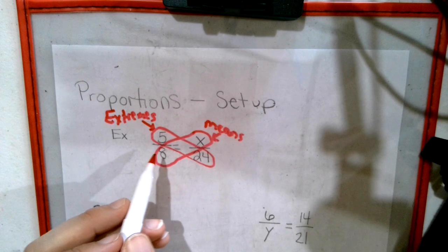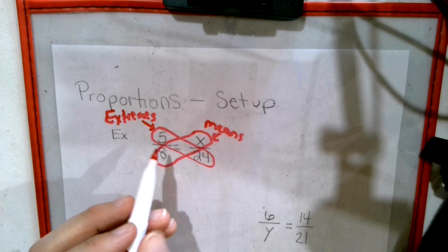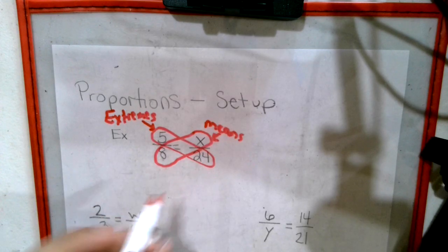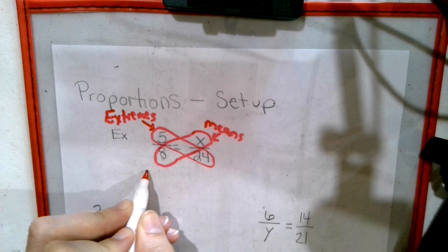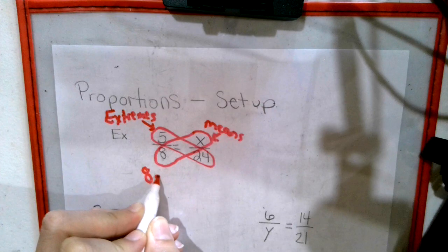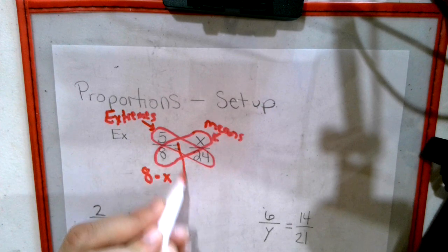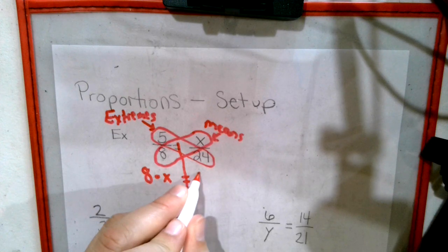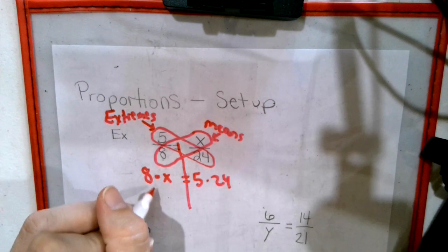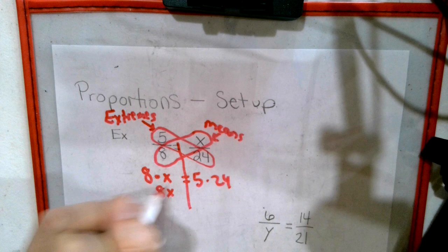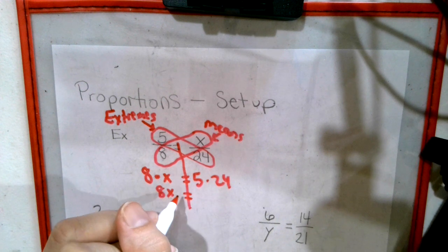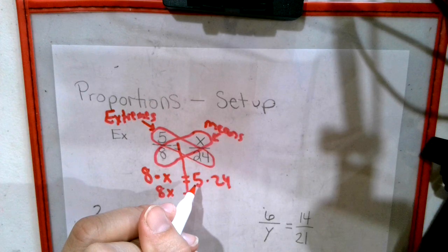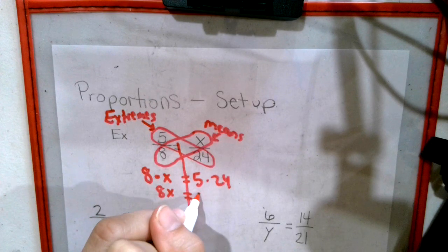So now a proportion is going to be diagonal multiplication. So we're going to take the means. We have 8 times x equals 5 times 24. 8x, we shove them together. And then we shove these together, but we actually have to do the math. So that's 120.